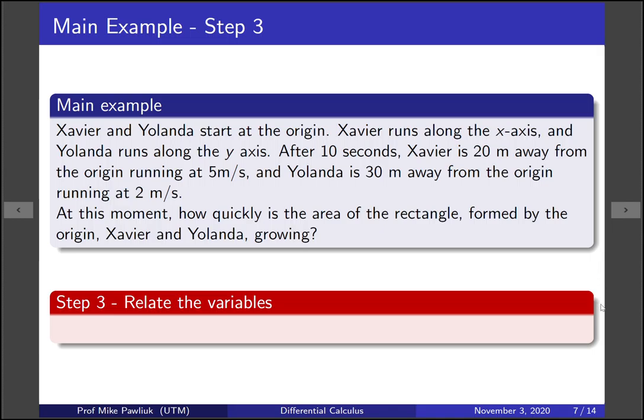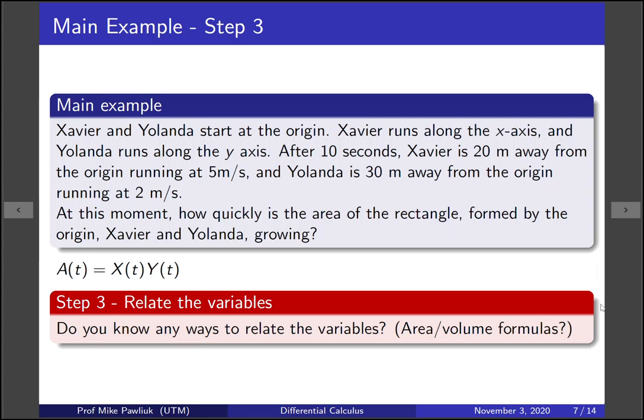Once we've done that, now we need to actually relate the variables in the problem. You should ask yourself, do you know any ways to relate the variables? Oftentimes this will be associated with areas or volume formulas. So what should it be in our particular case? Well, it's the area of a given rectangle, and from your picture, from your model, you should be able to say what the area formula is, and how it relates to x(t) and y(t). In this case, it's simple. The area is x(t) times y(t), sort of the simplest possible geometry we could have. Now that our variables are related, let's move on to the next step.